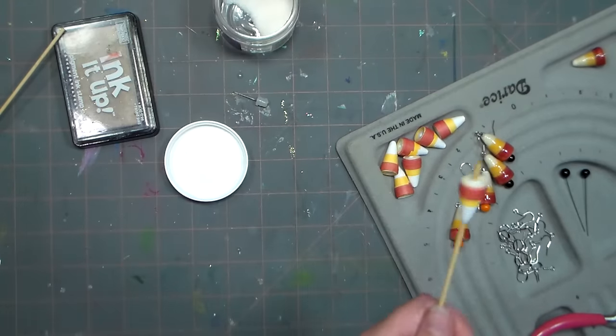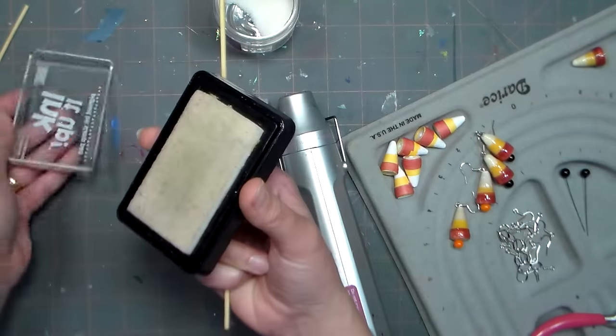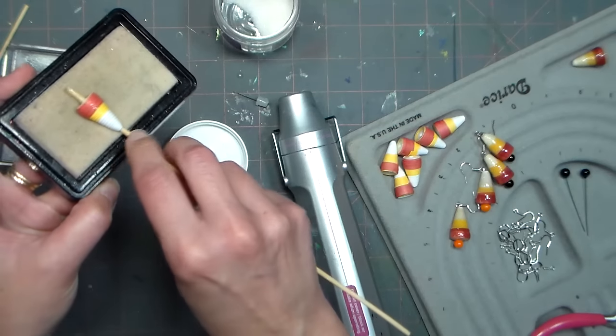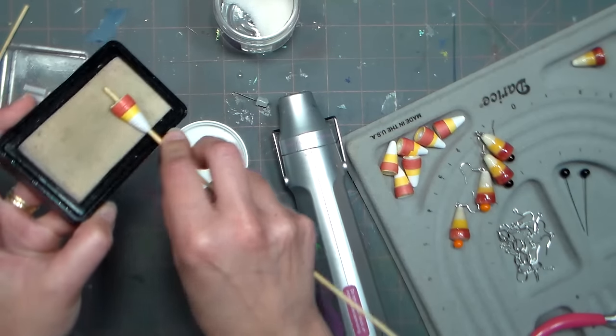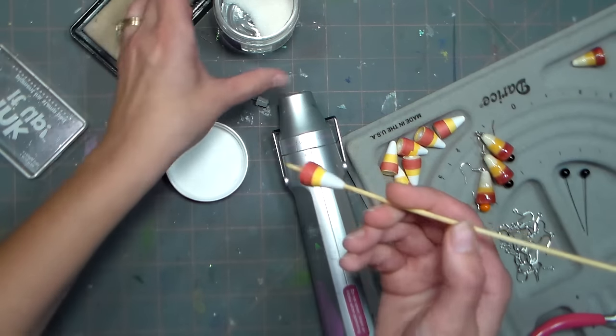I've got my heat gun here, and this clear ink, but you can also use vegetable glycerin if you have that. You can find the clear ink, the embossing powder, and the heat gun anywhere that sells stamping supplies, AC Moore, Joann's, all those places would have it.